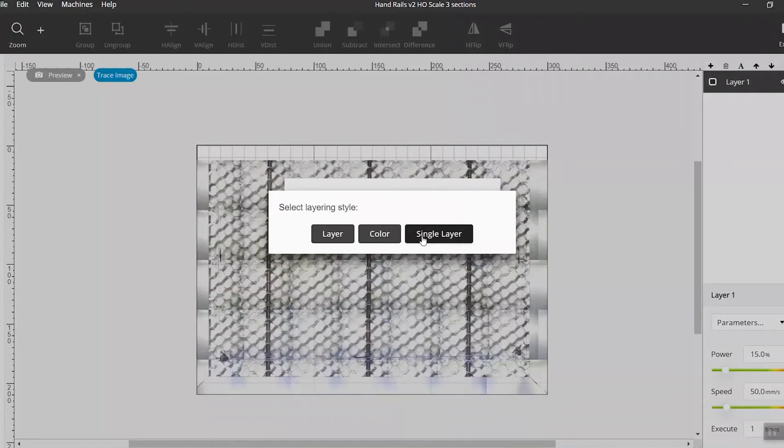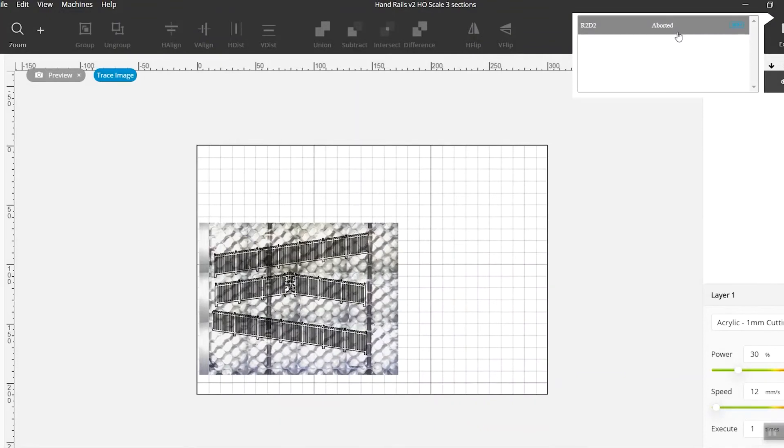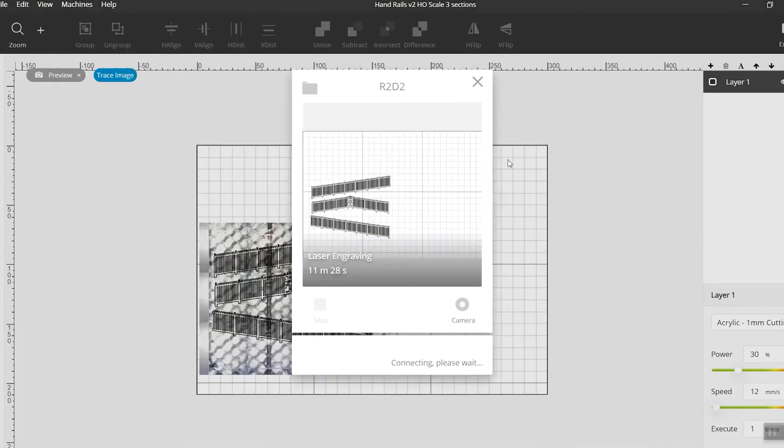Position it so that it's over the material in the machine, next select the power and speed settings. This is one millimeter acrylic so I used 30% power and 12 millimeters per second, but those settings will vary depending on the material and the environmental conditions.